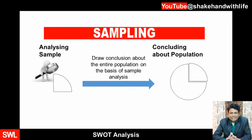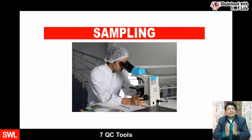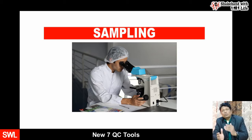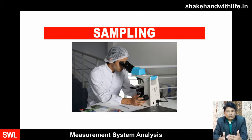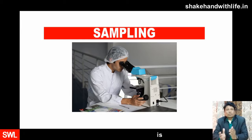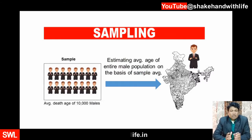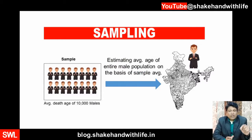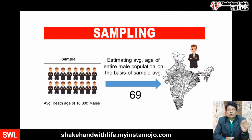In other words, it is the process of obtaining information about an entire population by examining only part of it. In most research work and surveys, the usual approach is to make generalizations or to draw inferences based on samples about the parameters of the population from which the sample is taken — such as concluding that the average death age for the entire male population of India is 69 years, based on the average death age for a sample of 10,000 males.